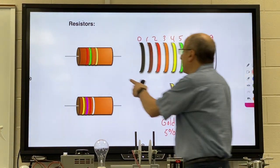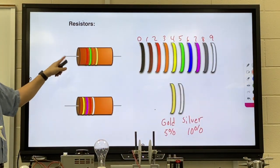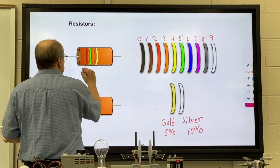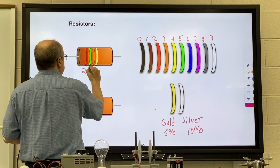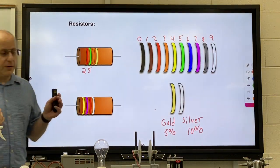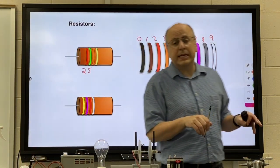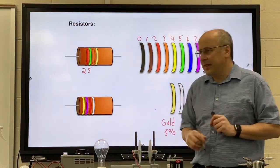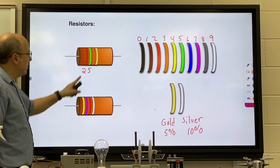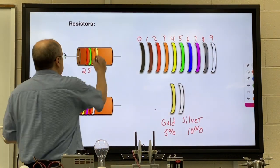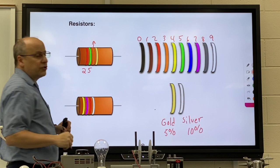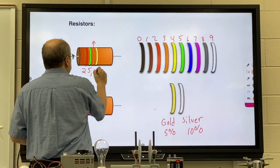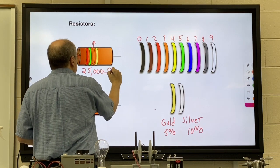The first resistor I'd like you to draw is red and green and orange and gold. Red is two and green is five. This is easy for me to remember because I see red and green and I think Christmas 25, the 25th. So it's 2-5. Orange is 3. Now this is tricky. The third stripe you don't put a three, you put three zeros.